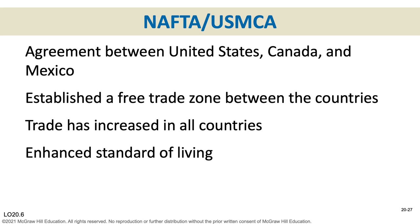Under President Trump, NAFTA was re-evaluated and renamed the United States-Mexico-Canada Agreement (USMCA). It's essentially the same but includes more protections for workers in Mexico and more requirements for the percentage of an automobile that must be made among the three nations to qualify for reduced tariffs. When NAFTA passed in 1993, many feared all the jobs would go to Mexico — but that didn't happen. Unemployment in Mexico, the United States, and Canada all went down, and the standard of living in all three countries was enhanced.